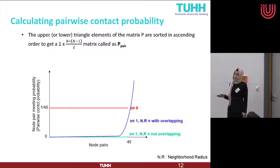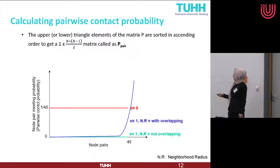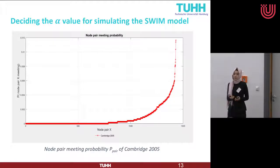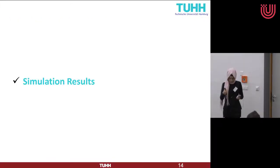Looking at the Cambridge 2005 real-life trace, the behavior looks similar to the case where the neighborhood radius is overlapping, suggesting alpha is really high. About two-thirds of node pairs had no or very few contacts, while some node pairs had significant contact. The conclusion is: more non-linearity in the graph means higher alpha; a flat graph means alpha is low — a thumb rule we can use. However, we still cannot determine the exact alpha value — whether it is 0.9 or 1.0 — just from this.